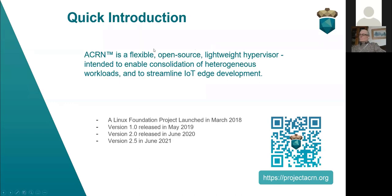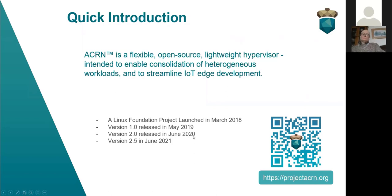In one sentence, ACRN is a flexible, open source, lightweight reference hypervisor that is built with focus on real-time and functional safety requirements. It is optimized to streamline the development cycle for embedded systems, and it's a Linux Foundation project launched in March 2018. It had its version 1.0 and 2.0 releases in 2019 and 2020. In the coming weeks, we will have version 2.5 release.